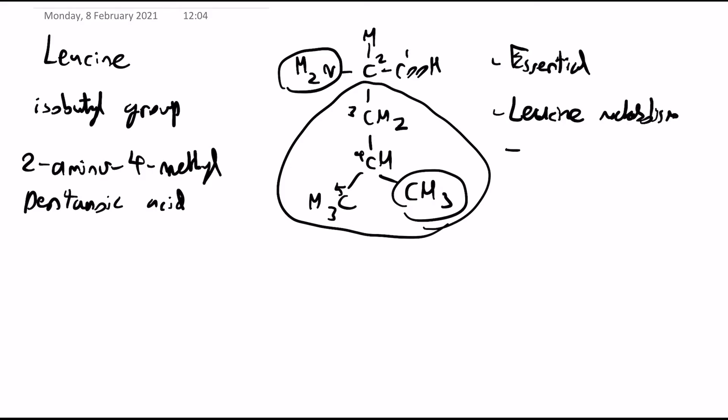produced via leucine metabolism is a coenzyme called acetyl-CoA, which is very important in the citric acid cycle, or if you're a peasant, the Krebs cycle.